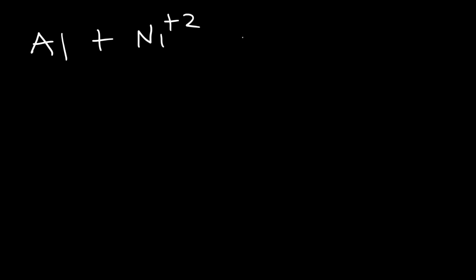So let's start with a neutral solution. If aluminum metal reacts with Ni²⁺ and it produces the Al³⁺ cation and nickel metal, go ahead and balance this reaction using the half reaction method. When balancing a redox reaction you need to make sure that not only the atoms and ions are balanced, but also that you have charge balance — the charges must be balanced on both sides.